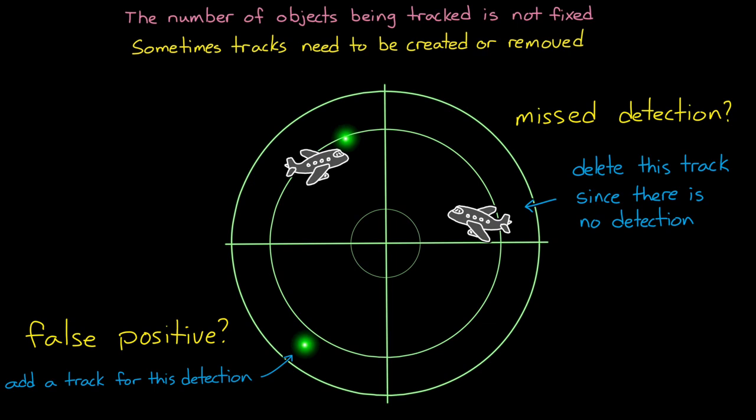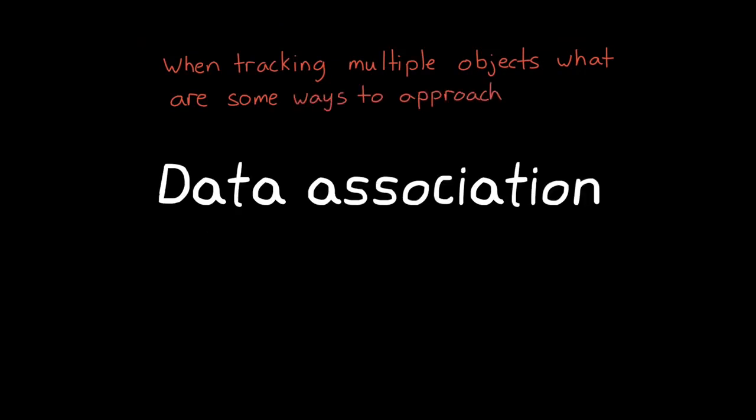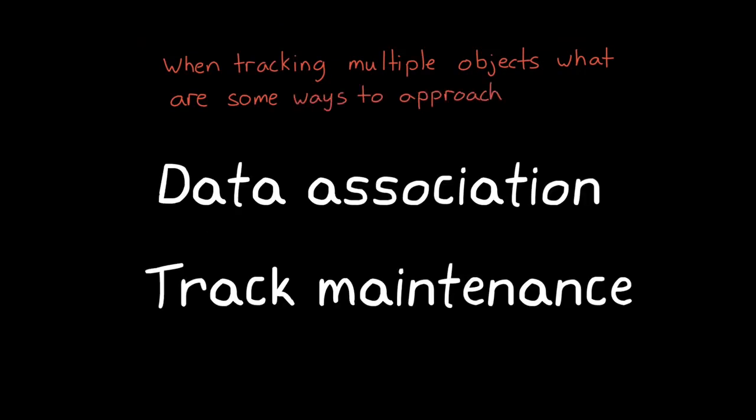So we need to be careful here, so that we aren't creating tracks prematurely, which clutters our view of what's actually there. And we aren't deleting tracks prematurely, which decreases the effectiveness of tracking in the first place. This is the track maintenance problem. So that's what we're going to cover for the rest of this video. When tracking multiple objects, what are some ways that we can approach data association? And what are some ways that we can address track maintenance?